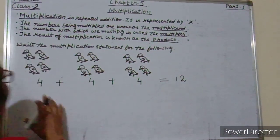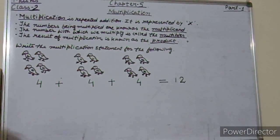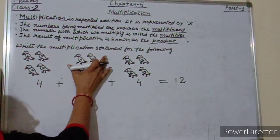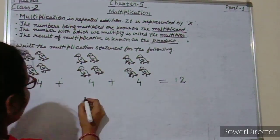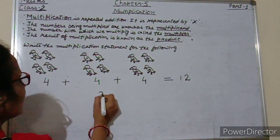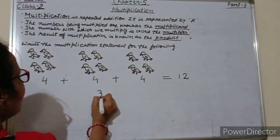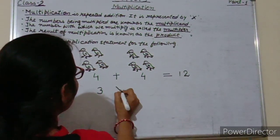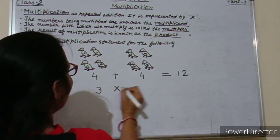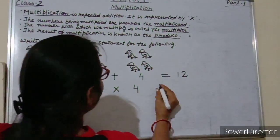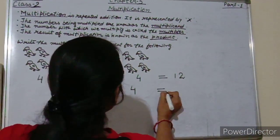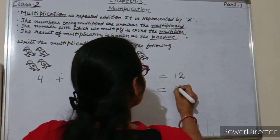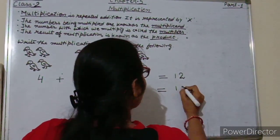So how many groups are there? 1 group, 2 groups, 3 groups. Here we will write 3 times 4 — means 3 into 4. So 3 into 4 is equals to 12.